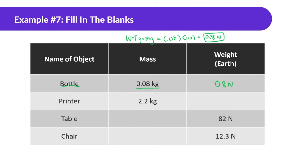A printer has a mass of 2.2 kilograms. To find the weight of it, we're just multiplying by 10 — because that's the gravitational pull, 10 meters per second squared — so 22 newtons. A table has a weight of 82 newtons, which means its mass, dividing by 10, is going to be 8.2 kilograms. A chair has a weight of 12.3 newtons, which means the mass of it is going to be 1.23 kilograms.